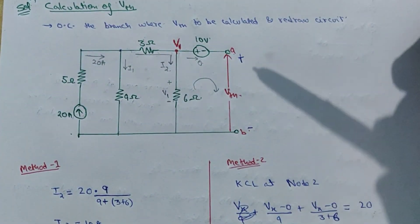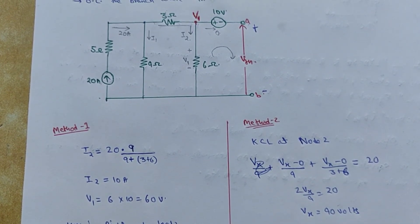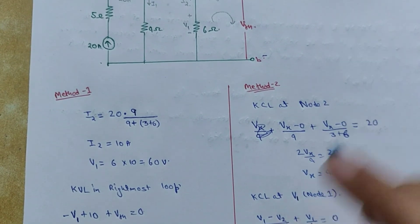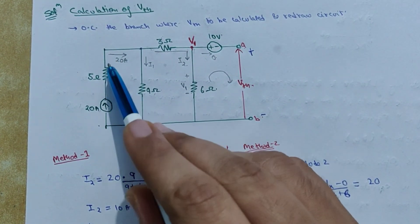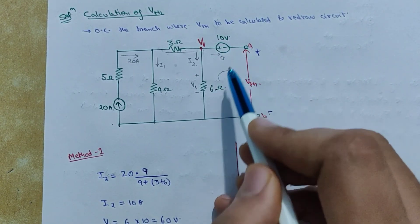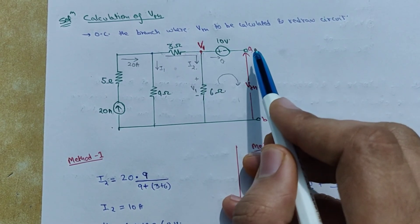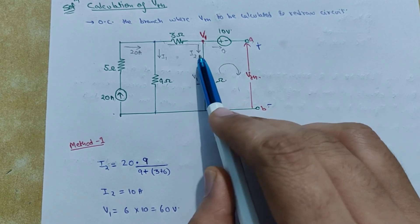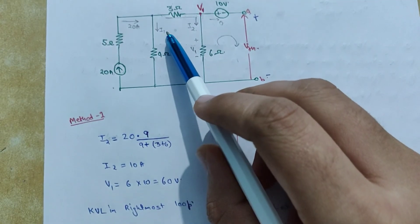Now we have to calculate VTH. It can be easily calculated using nodal and mesh analysis. I have shown two methods so you never get confused. In Method 1, I have divided the currents. 20 amperes is flowing through this branch; I have assumed I1 is flowing through one branch and I2 through another. This branch is open circuited, so the current in those branches is equal to zero. All the I2 amperes coming into the 3-ohm resistor will go to the 6-ohm resistor. I then calculated I2 and I1, followed by V1, and from that, VTH.